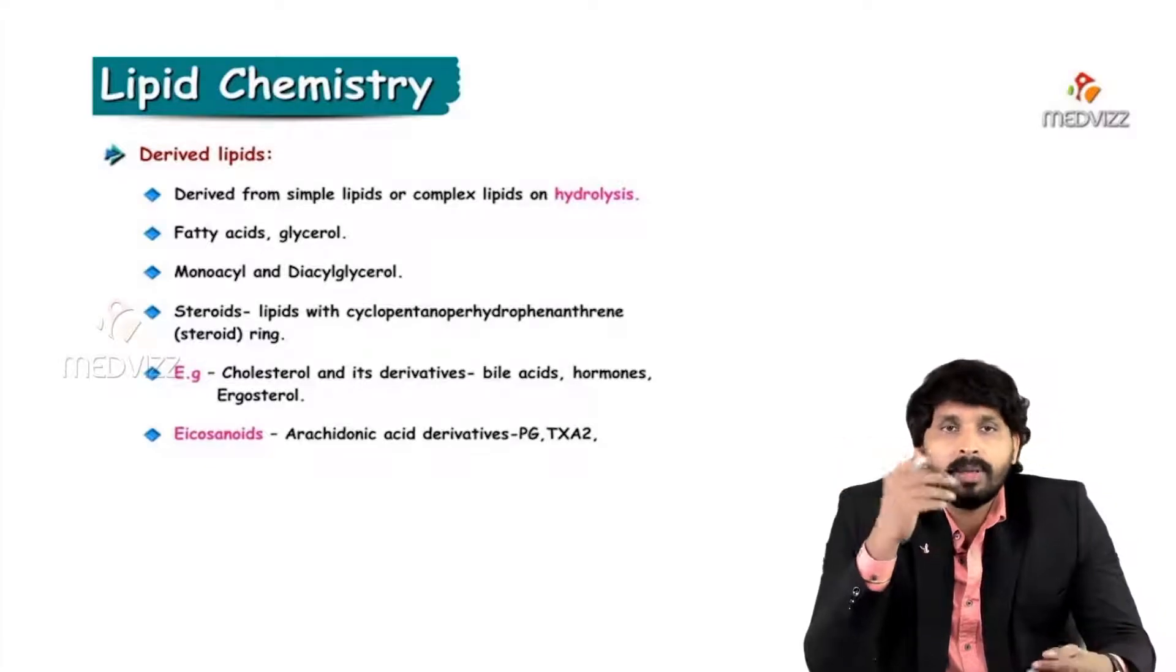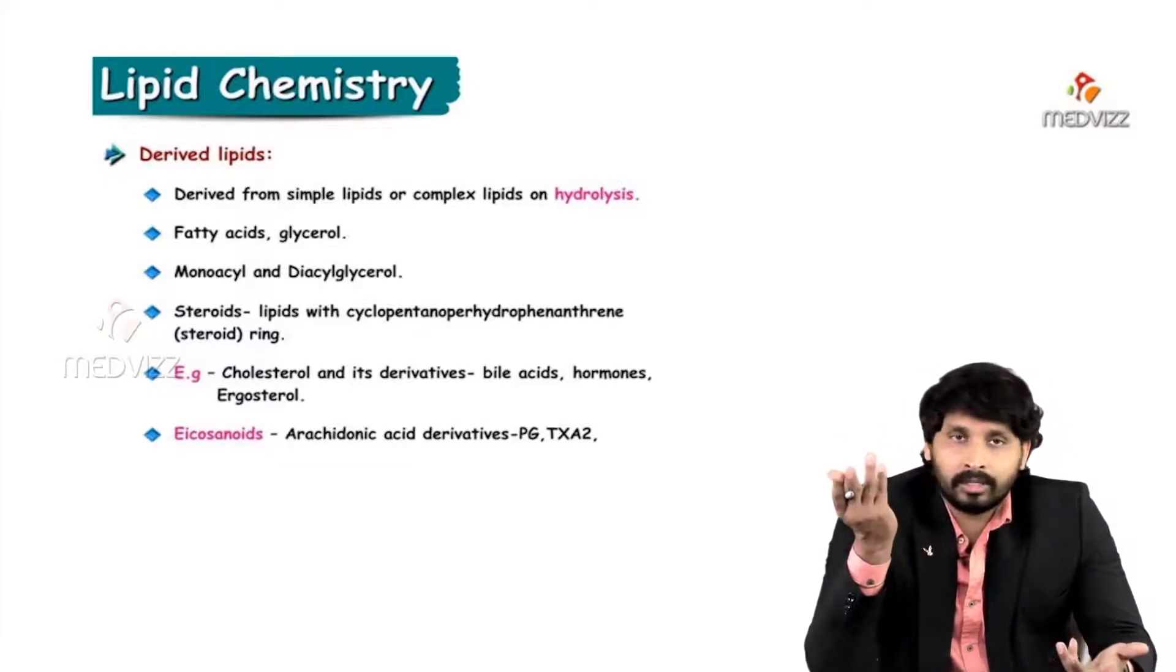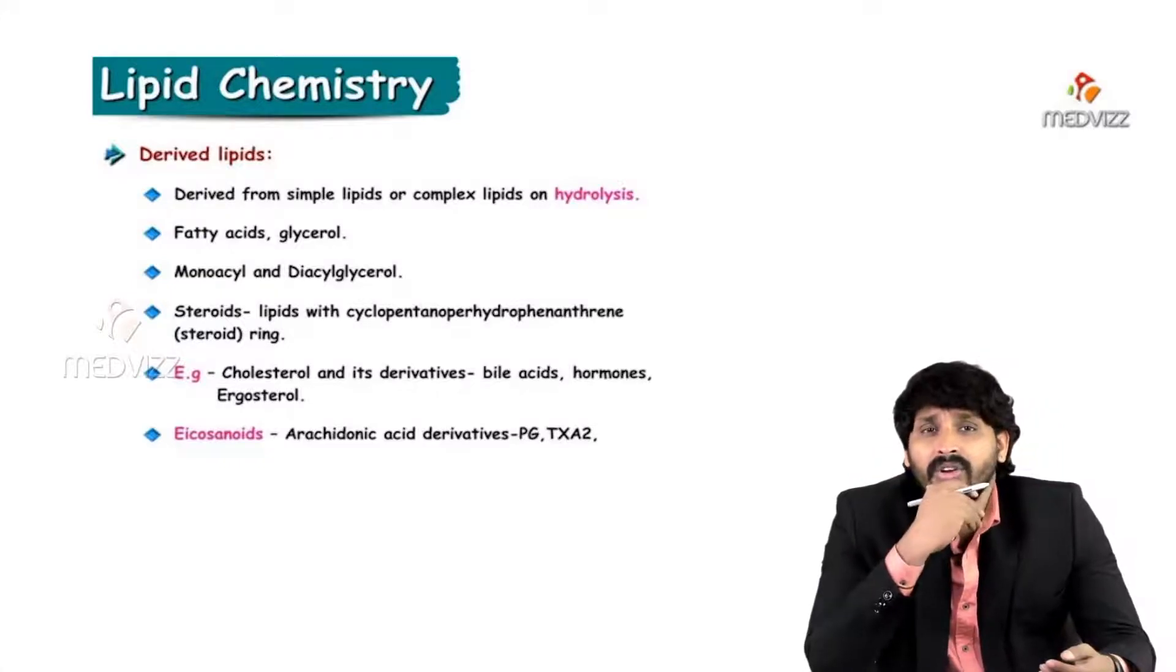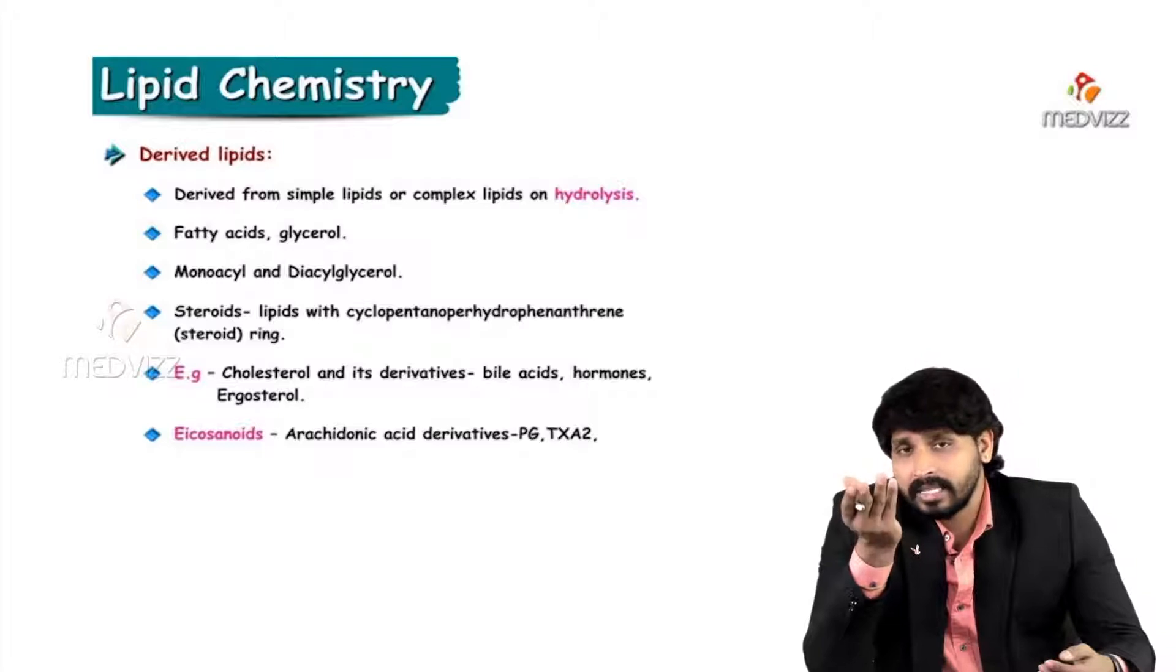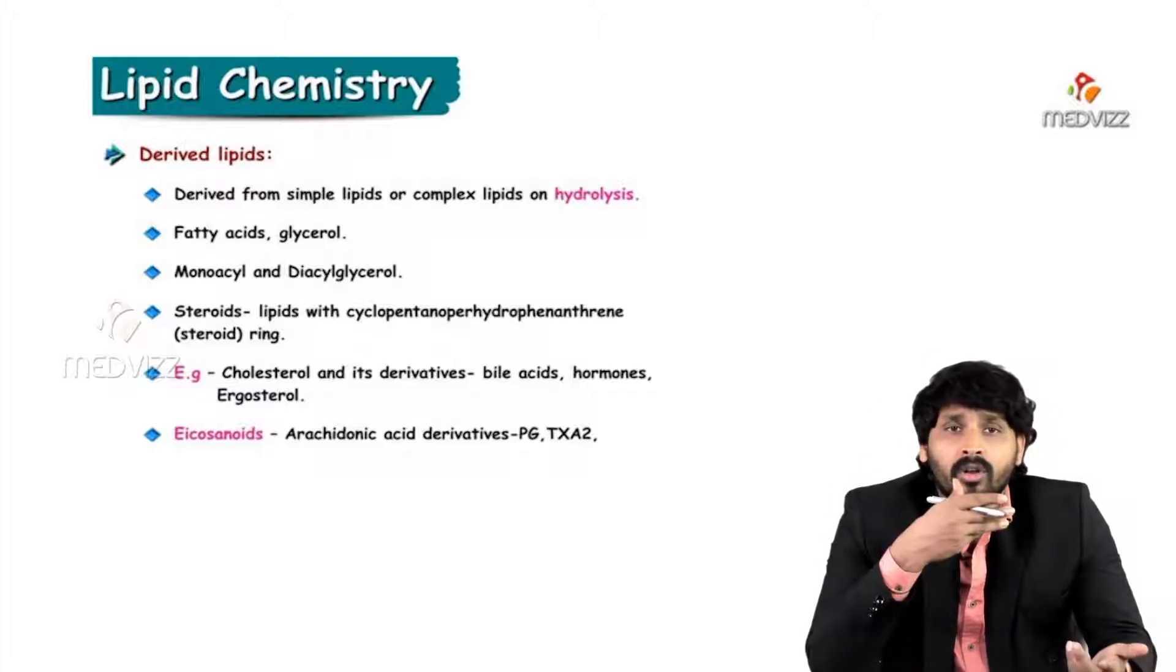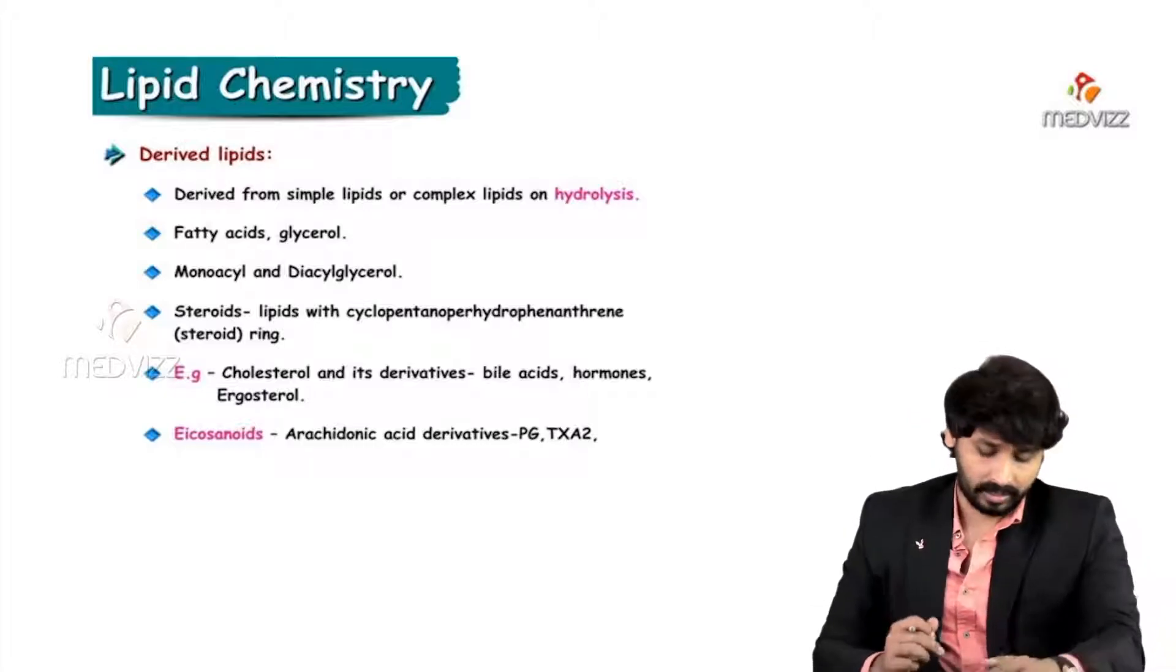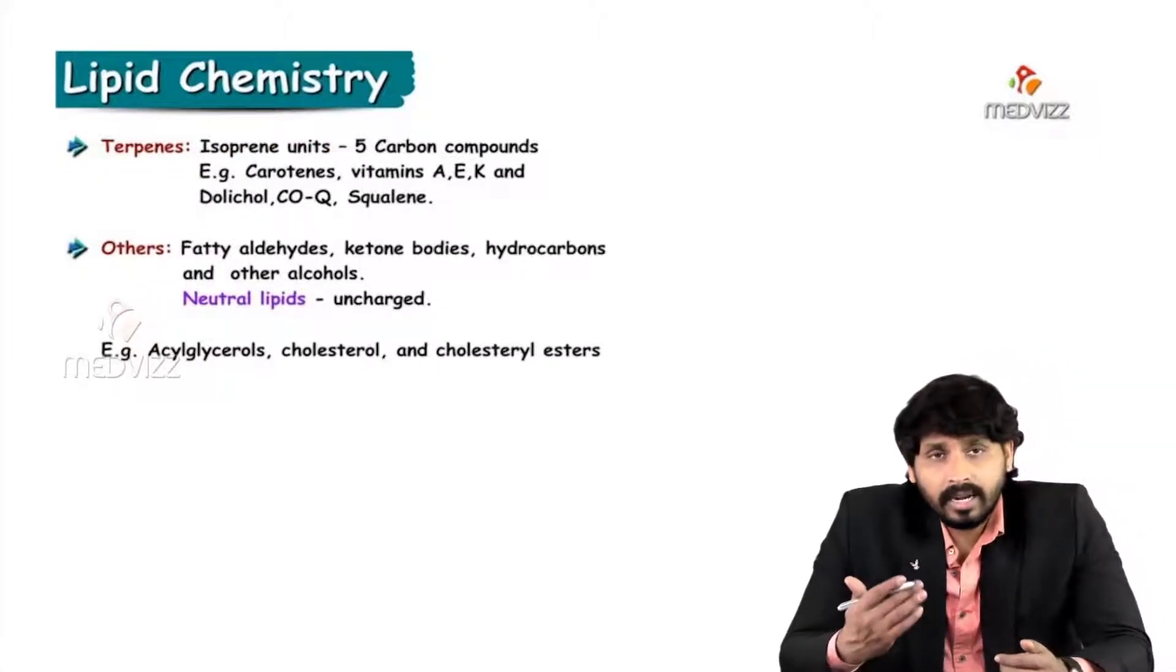So glycerol may be monoacyl glycerol or diacyl glycerol and steroids - lipids with a cyclopentanophenanthrene ring, such as cholesterol and its derivatives such as bile acids, hormones, ergosterol and eicosanoids. All these comes under derived lipids.